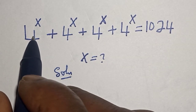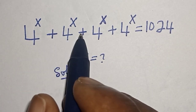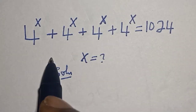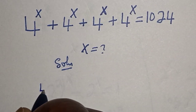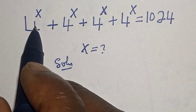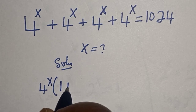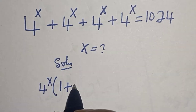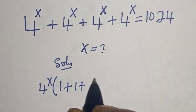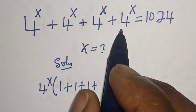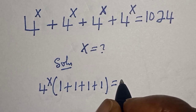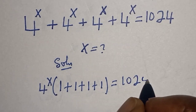We have 4 to the power of s, plus 4 to the power of s, plus 4 to the power of s, plus 4 to the power of s. Since 4 to the power of s is common, let's bring it out. We have 4 to the power of s, bracket, 1 plus 1 plus 1 plus 1, is equal to 1024.